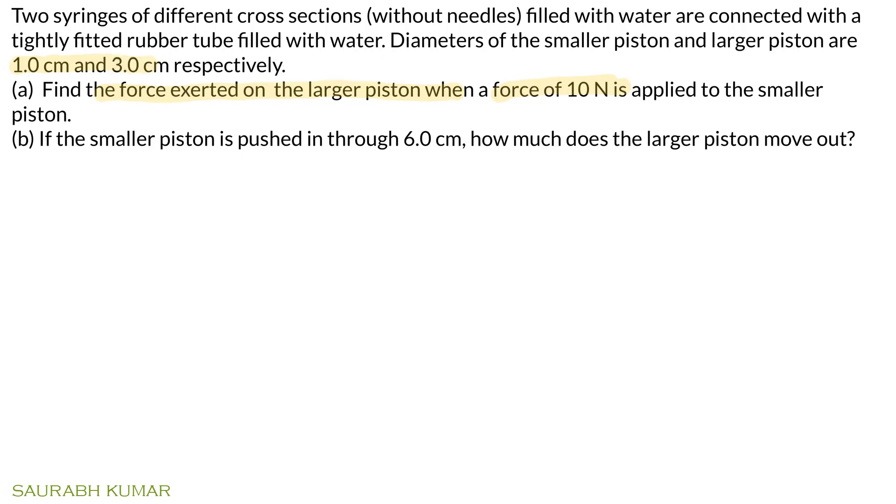These two syringes are connected with a rubber tube filled with water, so we can use the concept of hydraulic lift. Using the formula straight away: F2 equals A2/A1 times F1. Substitute numerical values: π times (3/2 times 10⁻²)² divided by π times (1/2 times 10⁻²)² times F1, which is 10 Newtons. This cancels out to 9 by 1, so F2 equals 90 Newtons.